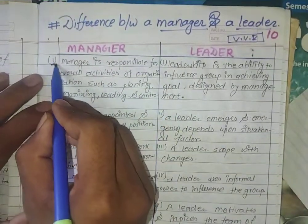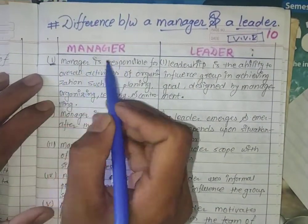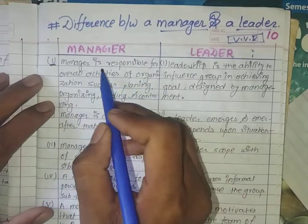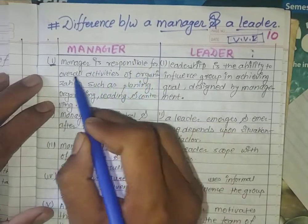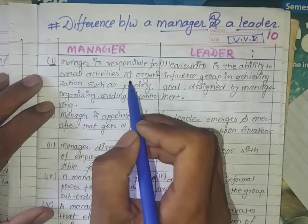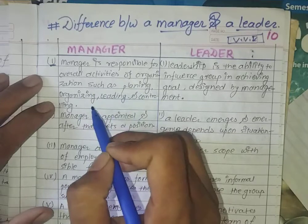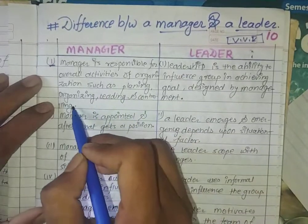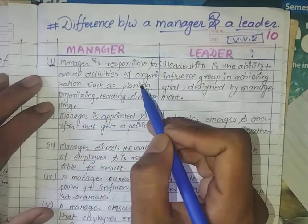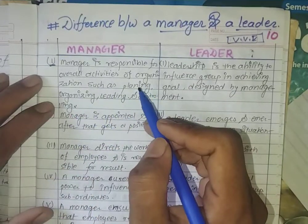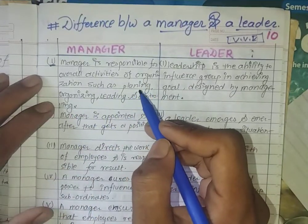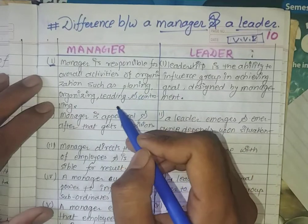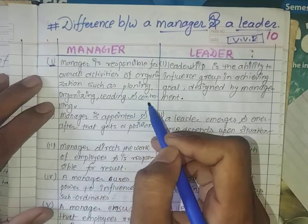First point about the manager: a manager is responsible for the overall activities of the organization — planning, organizing, leading, and controlling.